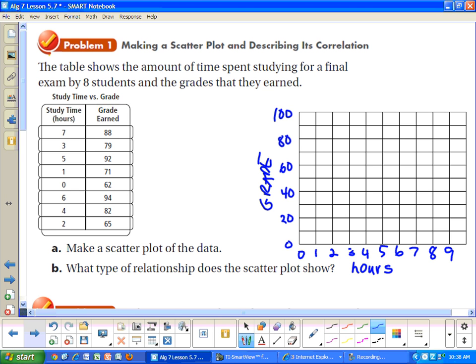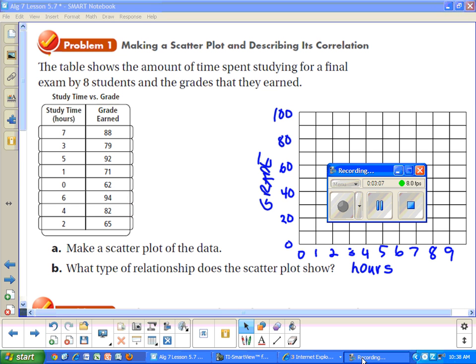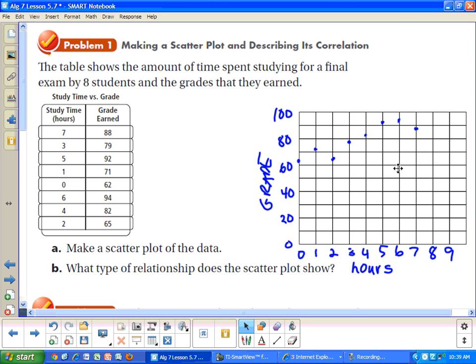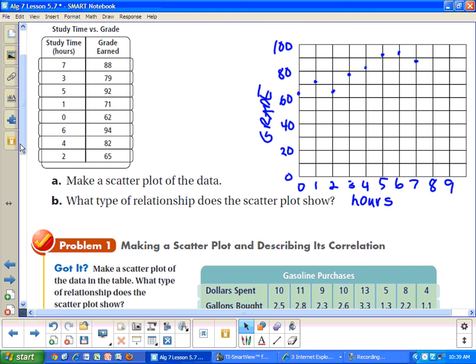All right, I'll plot the points. You can plot the points. Go ahead and pause. All right, here's what the graph looks like when you plot all the points. And if you look closely, you may see, and I'll draw a line to help you notice this, but as the hours increase, the grade tends to go up. So this is a positive relationship or a positive correlation.